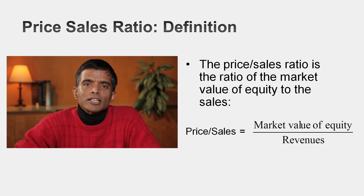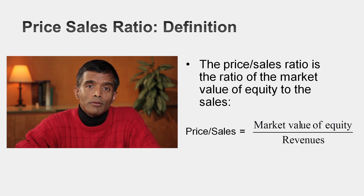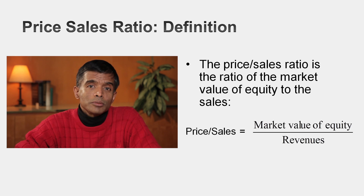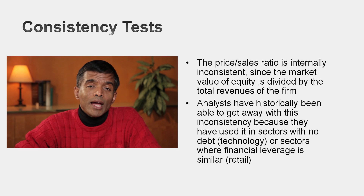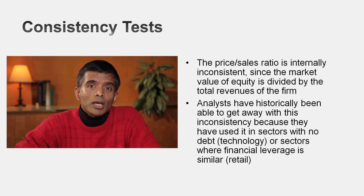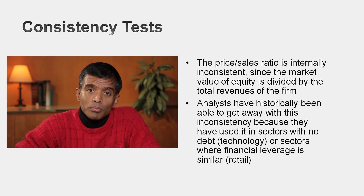The most widely used revenue multiple is the price-to-sales ratio — the market value of equity divided by the total revenues of the company. But already we're violating a consistency principle: the numerator is the market value of equity, yet revenues belong to the entire firm, not just to equity investors. It is not a consistent multiple. The consistent version replaces market value of equity with enterprise value — market value of equity plus debt minus cash — giving a much more robust enterprise value multiple.